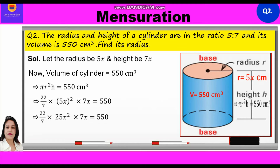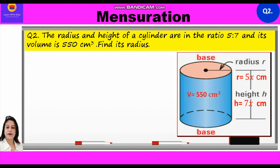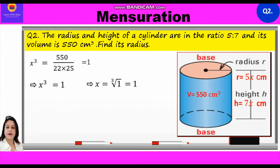We will write 22 by 7 into 25x square into 7x is equal to 550. Now, over here 7 and 7 will get cancelled. So, we are left with 22 into 25x cube is equal to 550. Further, we shall cross multiply and write x cube is equal to 550 upon 22 into 25, which is equal to 1. Therefore, x cube is equal to 1, so x is equal to cube root of 1, that is 1. Therefore, the radius of cylinder is equal to 5x, which is equal to 5 into 1, equal to 5 centimeter.